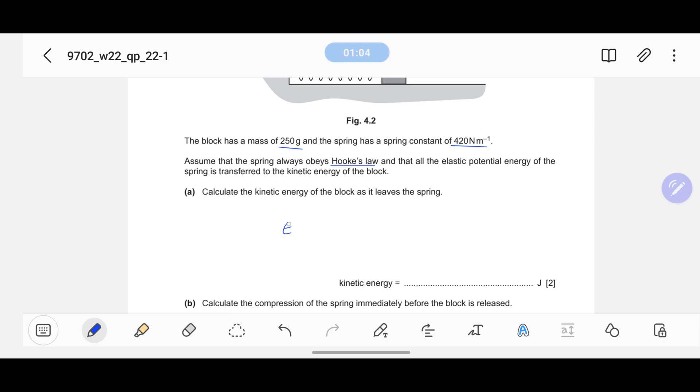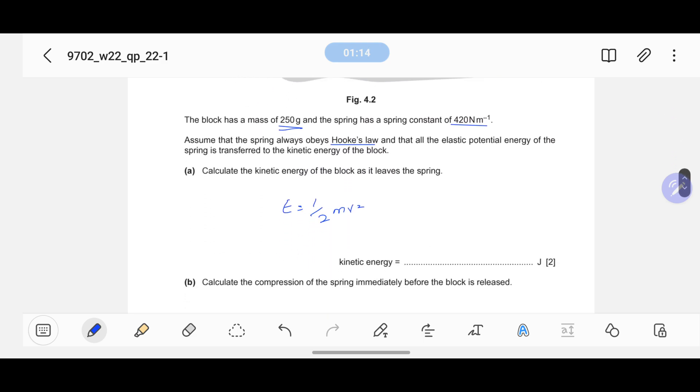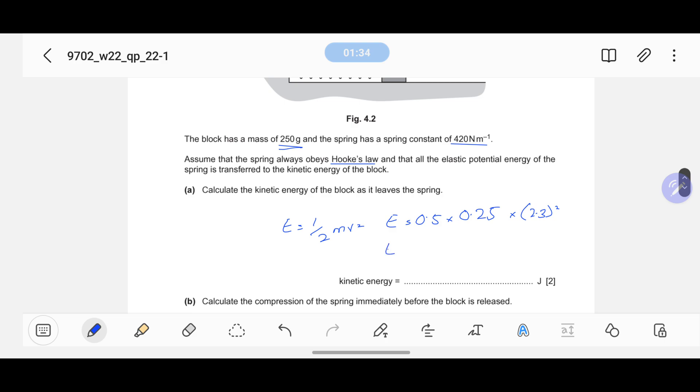In this case, kinetic energy has a formula of half mv squared, where we have this mass and the velocity 2.3 meter per second. If I plug all the values, my calculation would be somewhat like this. Make sure this is 250 grams, not kilograms, so you have to divide it by thousand and then multiply by 2.3 whole squared. I get a kinetic energy of 0.66125. I can round it off to two significant figures, that would make it 0.66 joules.